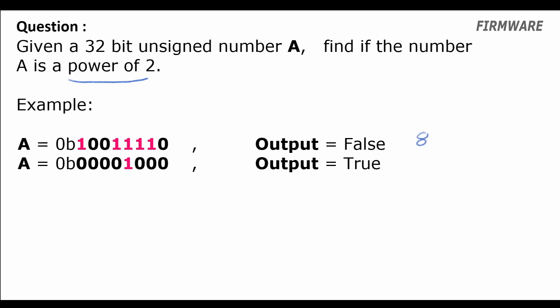All right, let's look at one of the possible solutions. The first thing is any number which is a power of 2 will only have a single bit which is 1 and all the remaining bits will be 0. For example, the number 8 is a power of 2, that is 2 raised to 3, and 8 in binary is 0 1 0 0 0, so it only has a single set bit.